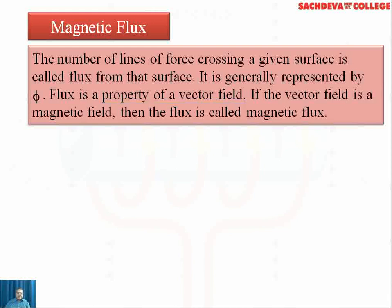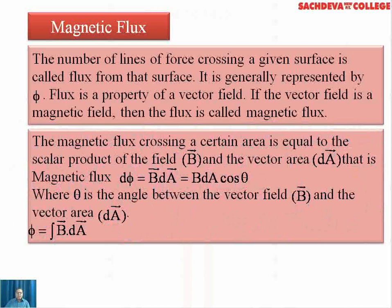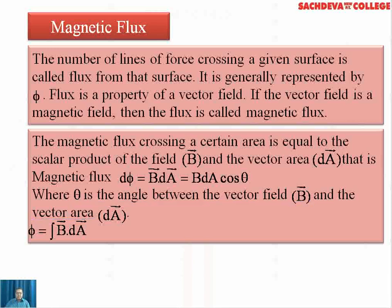If the vector field is a magnetic field, then flux is called magnetic flux. The magnetic flux crossing a certain area is equal to the scalar product of magnetic field B and the vector area dA. Magnetic flux can be written as the dot product of B and dA. In the scalar form, we write this as dφ = B dA cosθ, where theta is the angle between the vector field B and the vector area dA.